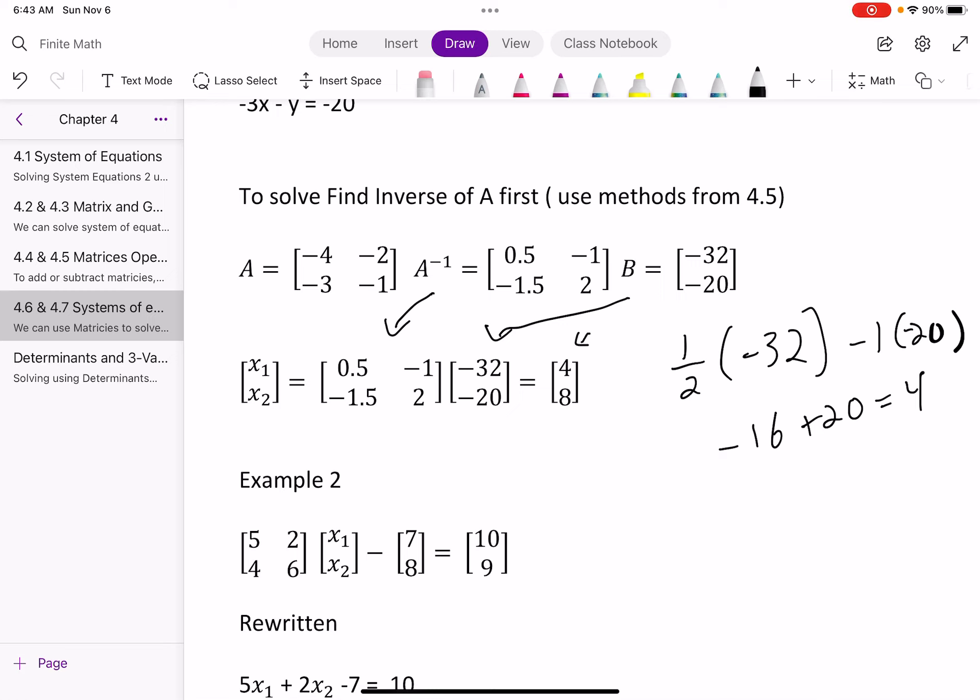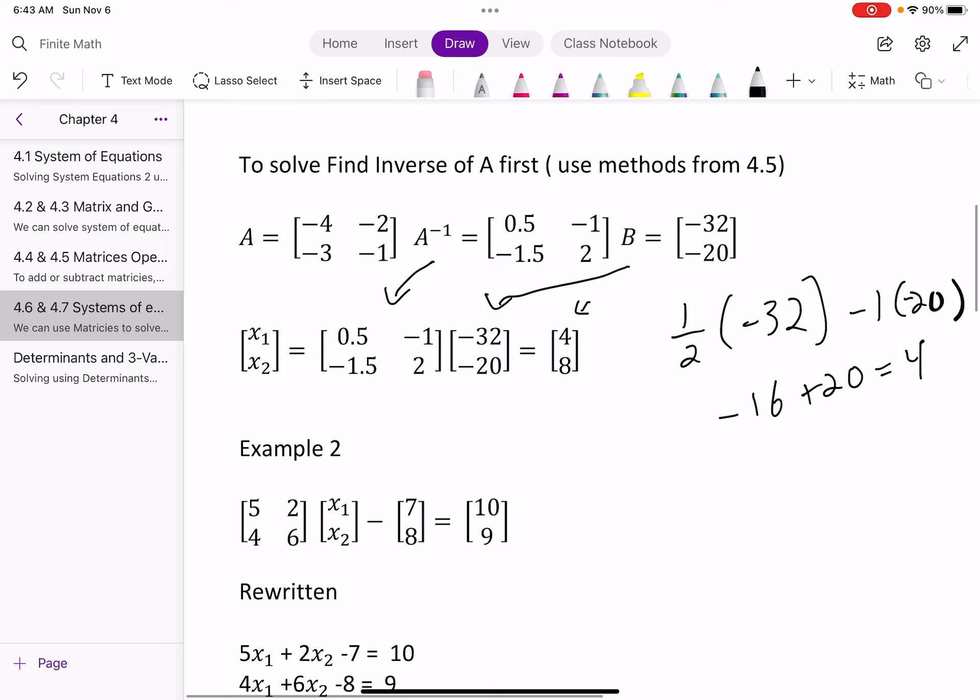And then I do the same thing here. I do negative 1 half times negative 32, 2 times negative 20, add them together, and that's where I get my 8. Again, just like we were doing before. We're basically taking everything we've learned in this last couple weeks, and now we can use it to solve for x's. I've basically shown you multiple different ways to solve a system of equations, and this one is just using the inverse.